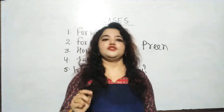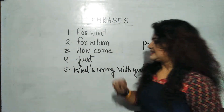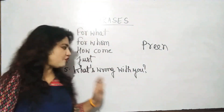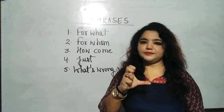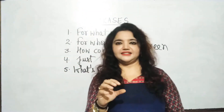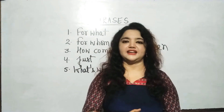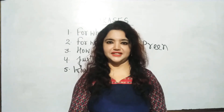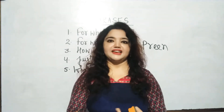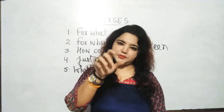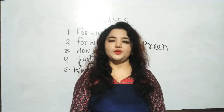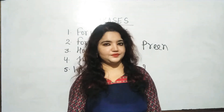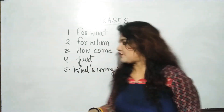Number five is 'what's wrong with you.' If someone looks pareshaan — disturbed or upset — you ask them 'what's wrong with you? You're looking upset. Kya hua?' That's how you use this phrase.